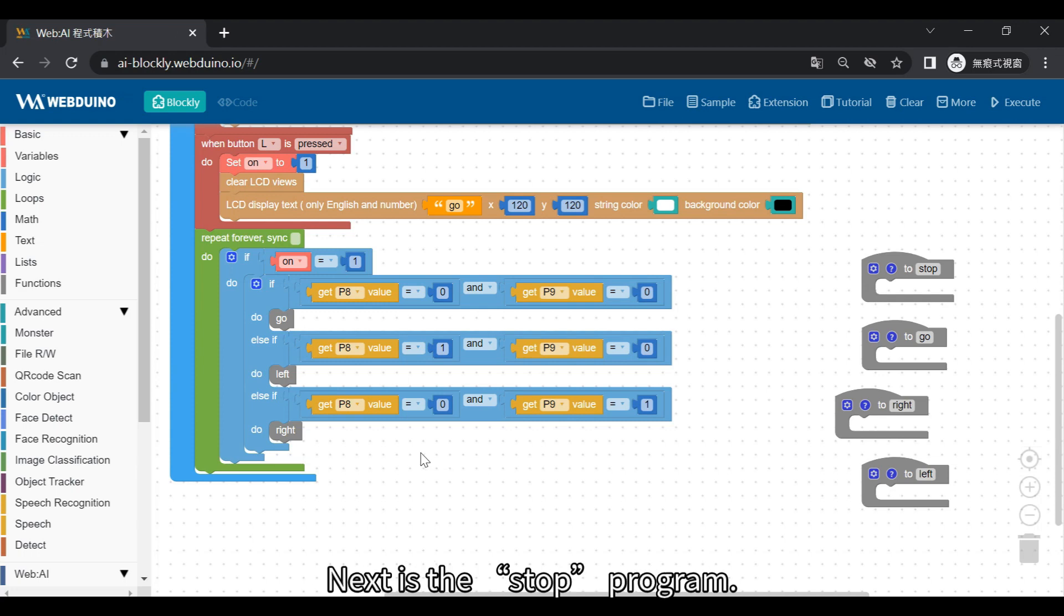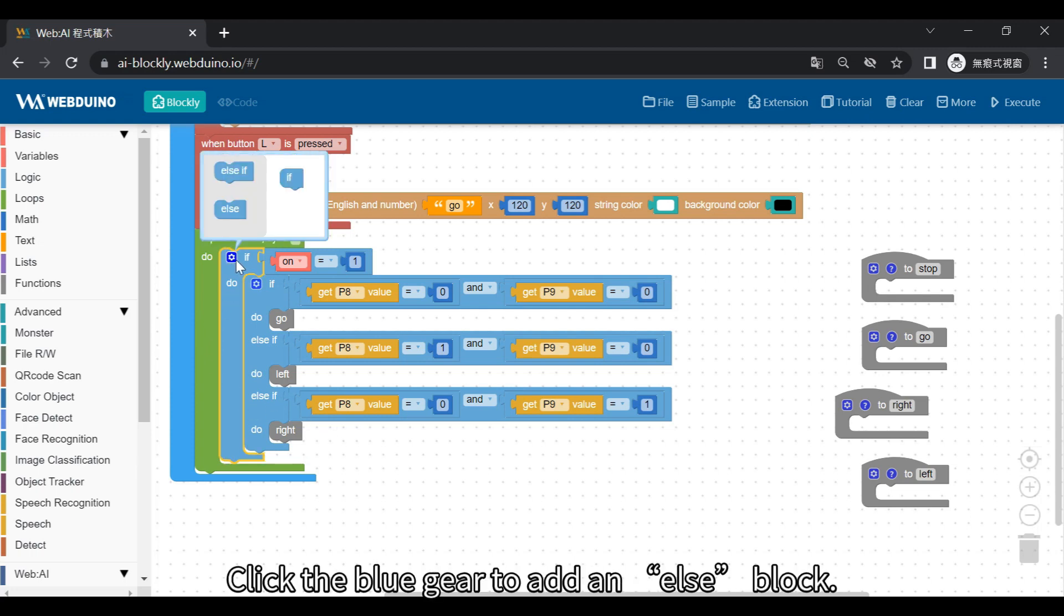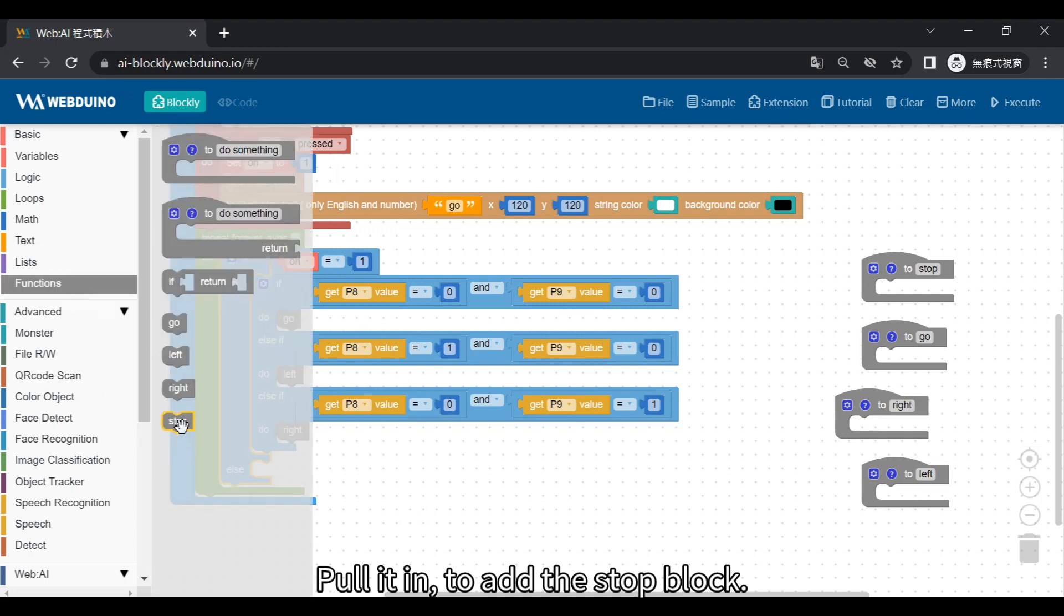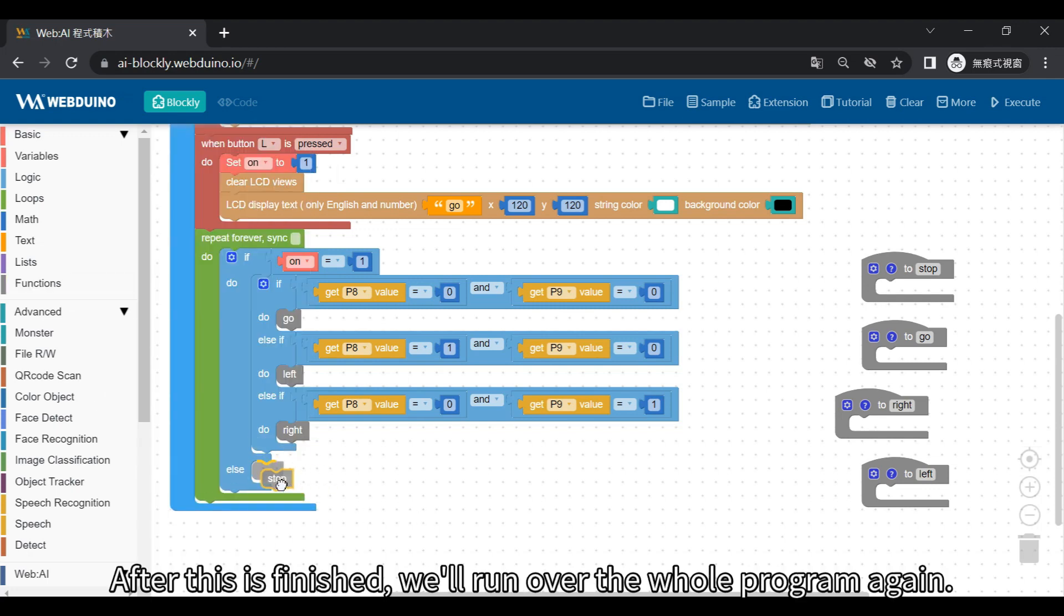Next is the stop program. Click the blue gear to add an ELSIFF block. Pull it in to add the stop block. After this is finished, we'll run over the whole program again.